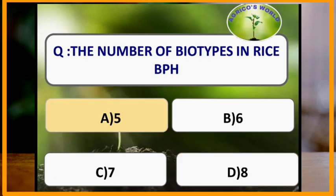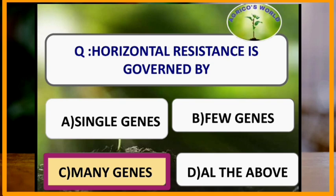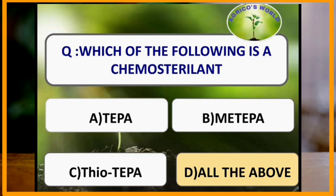The number of biotypes in rice BPH is 5. Horizontal resistance is governed by many genes, whereas vertical resistance is governed by single or few genes. The term 'third generation pesticides' refers to juvenile hormones. Chemosterilants include Tepa, Metepa and Thiotepa.